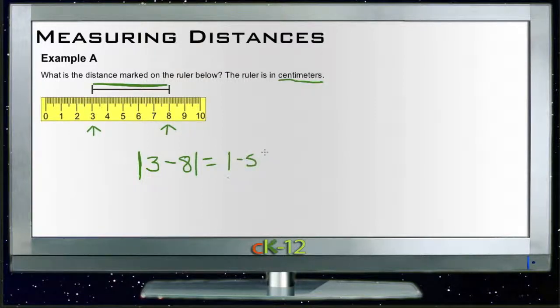So if we take three minus eight, that gives us the absolute value of negative five, which is just five. And since our ruler is marked in centimeters, then our answer is five centimeters. So this little black line right here is five centimeters long, and the distance between our two ticks is that five centimeters.